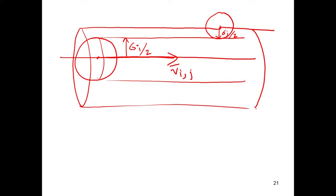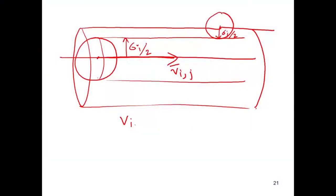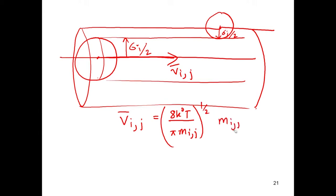What is v_ij? v_ij cannot be arbitrary, because we assume equilibrium Maxwell-Boltzmann distribution. By the Maxwell-Boltzmann distribution, v_ij has a definite form derived from the distribution of velocities, and from that PDF we can obtain the mean velocity: v̄_ij = (8 k₀ T / π m_ij)^(1/2), where m_ij = m_i m_j / (m_i + m_j) is called the reduced mass. Here k₀ is the Boltzmann constant, T is temperature, and m_ij is the reduced mass.